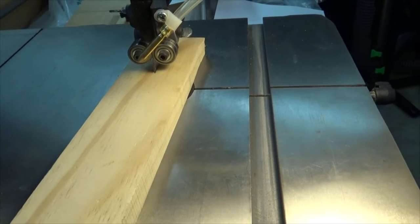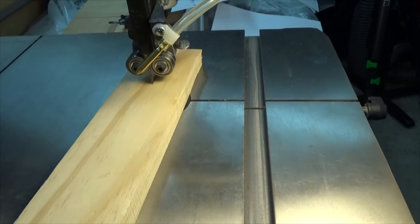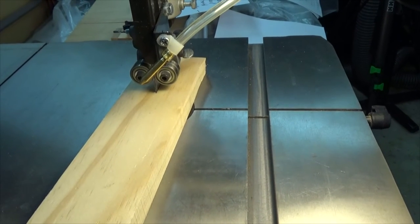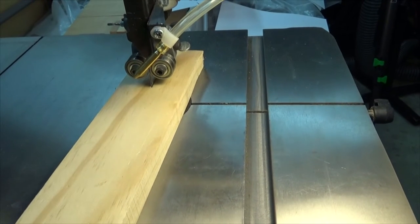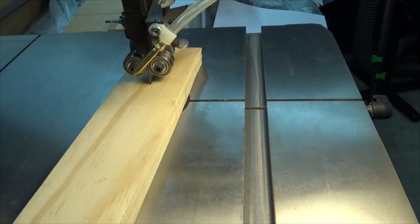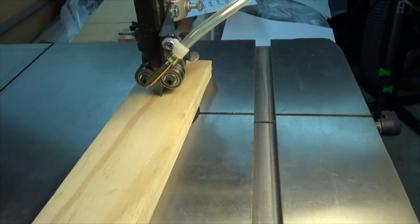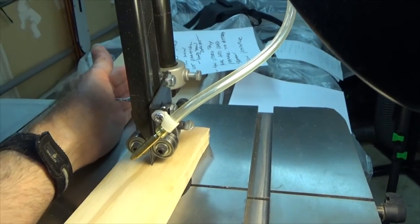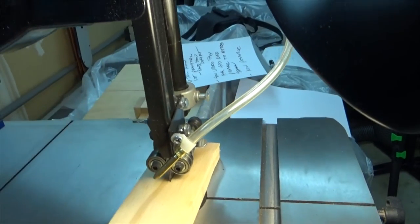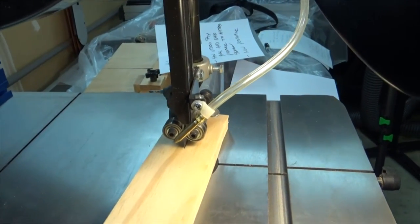This is an exaggerated example of bandsaw drift. The test piece of wood was cut down the middle, following a line part of the way down the board. If you'll notice, it's not parallel with the miter slot. What you would do at this point would be to take your fence and make it exactly parallel to the board. At this point, you could cut straight boards.